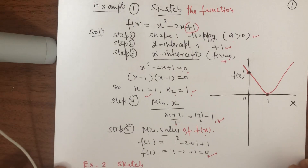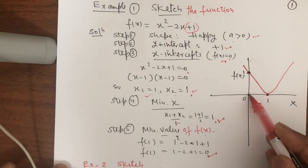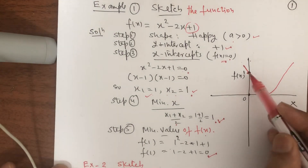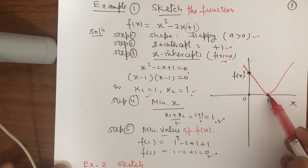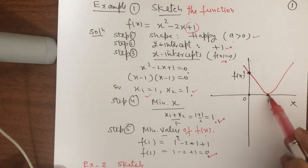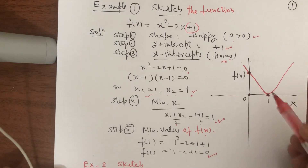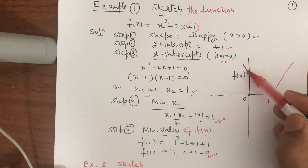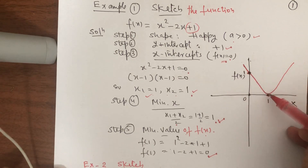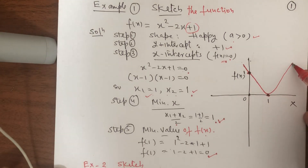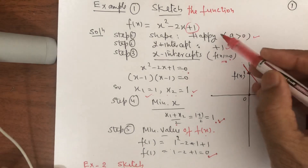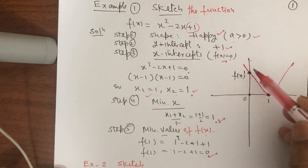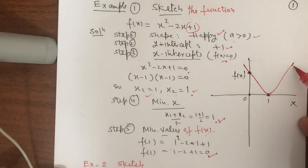So it is a typical type of function. The y-intercept is 1, x₁ is 1, x₂ is 1, and the minimum value is 1. The minimum f(x) is 0. So I draw it like this: start from here, come here and go up. Why go up? Because we know the shape of the curve is happy — we have to go up to make it happy.